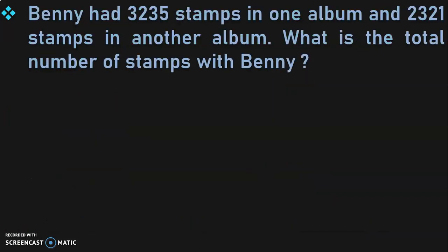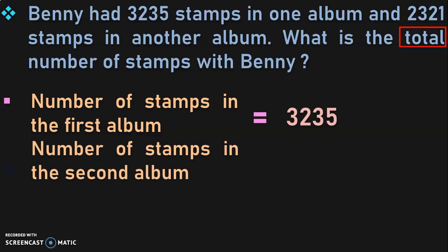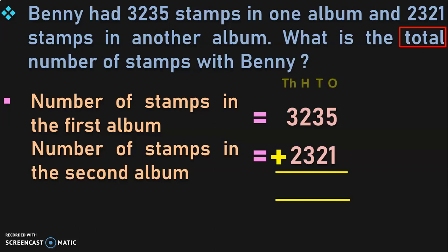Let us do another sum. Benny had 3,235 stamps in one album and 2,321 stamps in another album. What is the total number of stamps with Benny? After reading, the next step is identification of keywords. The keyword here is 'total'. Total indicates that we have to do an addition operation. Write down the statements: number of stamps in the first album is equal to 3,235. Number of stamps in the second album is equal to 2,321. Write down the place values — ones, tens, hundreds, and thousands — because we have a four-digit number.